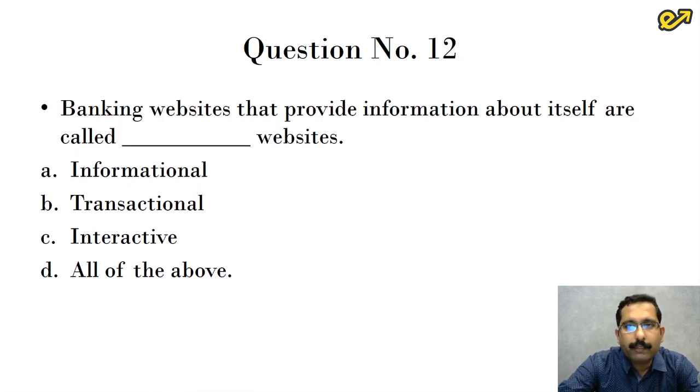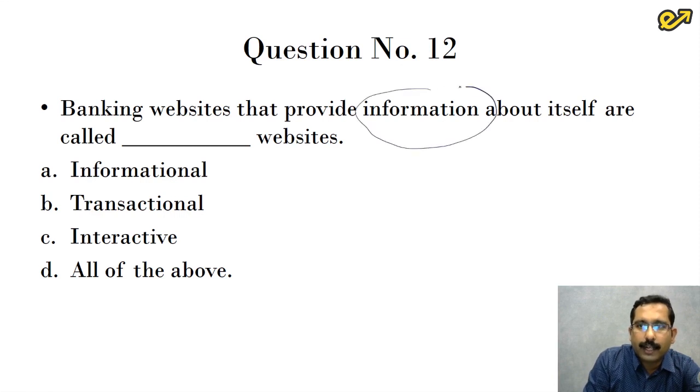Question number 12, banking websites that provide information about itself are called dash websites. There are two, three kinds of websites that we have. The primary of them is the information website. Second is the transactional website where we can actually transact through the website. Here it is told it is giving only the information. It is not facilitating any sort of transaction. So the answer for this is option A, it is informational website.